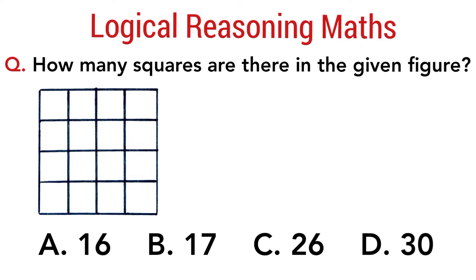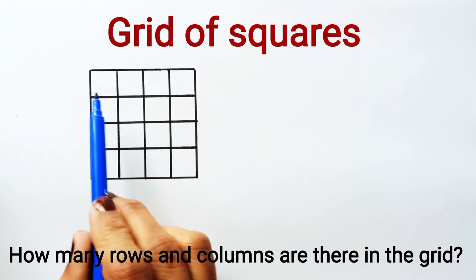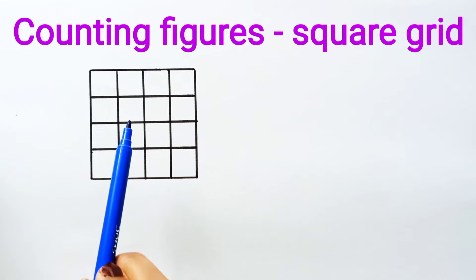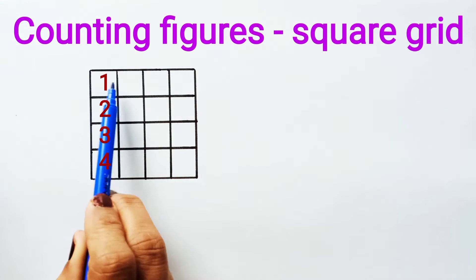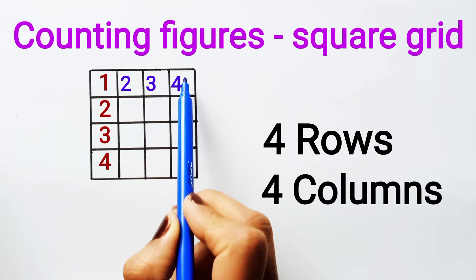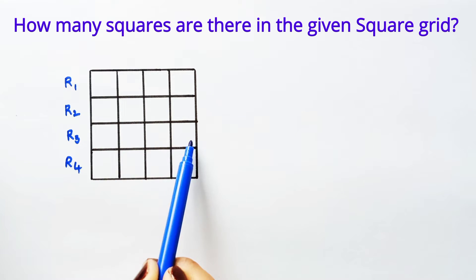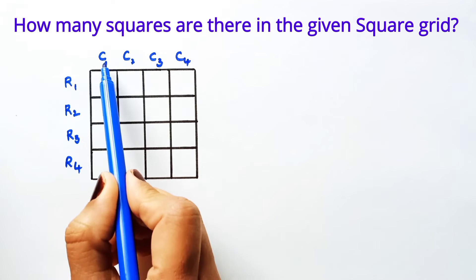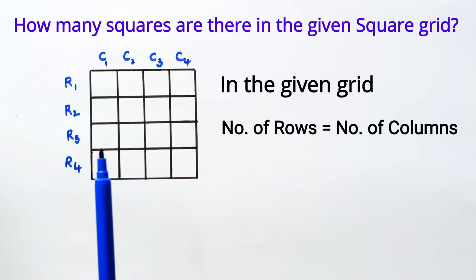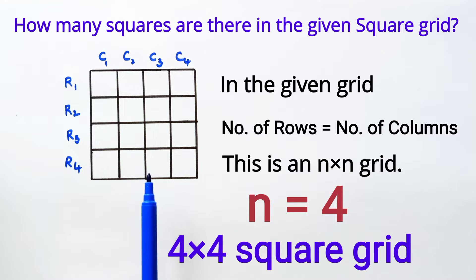Now let us find out the logic, pattern, and formula for counting the number of squares in a square grid. The given figure is a grid of squares. Let us find out how many rows and columns there are. There are 4 rows and 4 columns — Row 1, Row 2, Row 3, Row 4, and Column 1, Column 2, Column 3, Column 4. Since the number of rows equals the number of columns, it is an n×n grid, where n = 4. So it is a 4×4 grid.